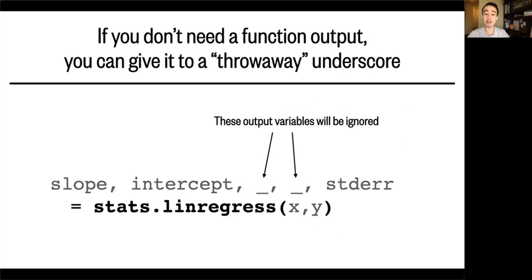Sometimes you don't need all the output variables from linregress or another function. This works for other functions, too. So I just want to point out that you can ignore those output variables by sending them to what we call a throwaway underscore character. This is basically just a placeholder here. So say we only wanted the slope, the intercept, and the standard error. And we didn't really care about r value or p value. We could just give those two outputs to these underscores. So this notation just keeps things a little tidier.